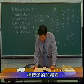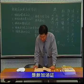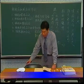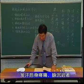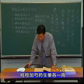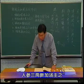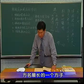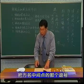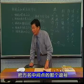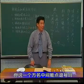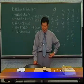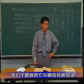桂枝汤的加减方，在这里举最后的一个例子，是新加汤证。原文第六十二条：桂枝新加汤证，发汗后身疼痛，脉沉迟者，桂枝加芍药生姜各一两，人参三两新加汤主之。这是伤寒论中方名最长的一个方子，我们干脆就把它叫做桂枝新加汤，或者再简称新加汤。